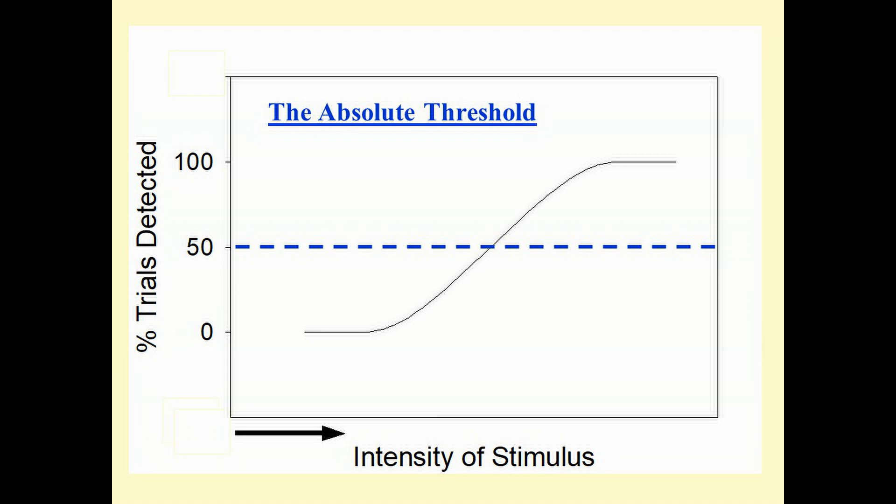The vertical axis shows percentage of trials in which a stimulus was detected, ranging from zero to 100 percent. The intensity of the stimulus is on the horizontal axis, increasing as you move toward the right.